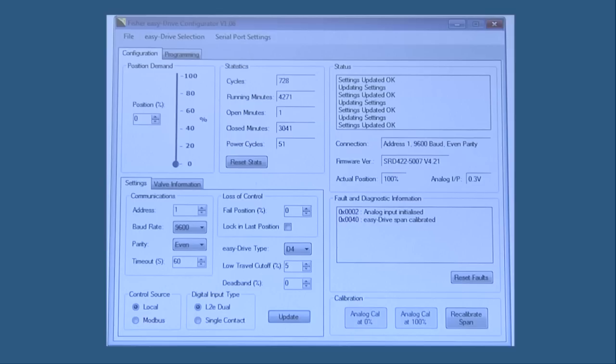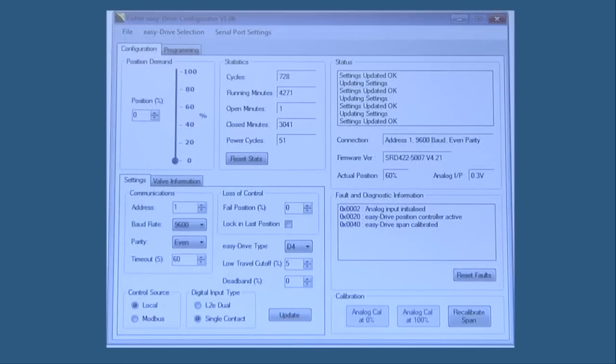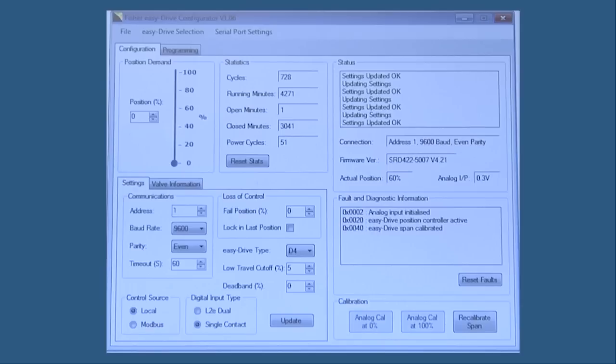We will now be discussing calibrating an on-off unit using digital inputs and the EZ-Drive configuration software. Initiating calibration procedures will cause your valve to move. If the valve is installed in line, be careful this does not cause an accident or an upset in your process.